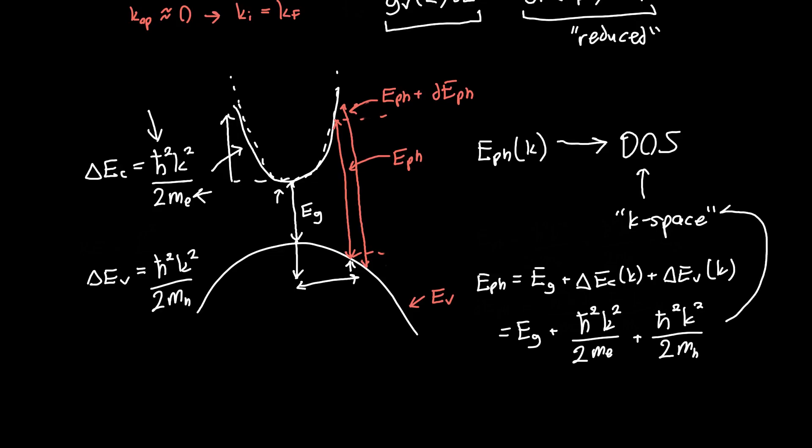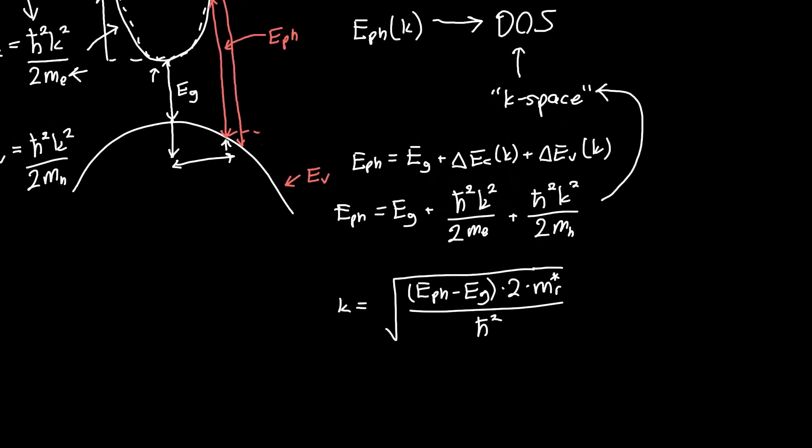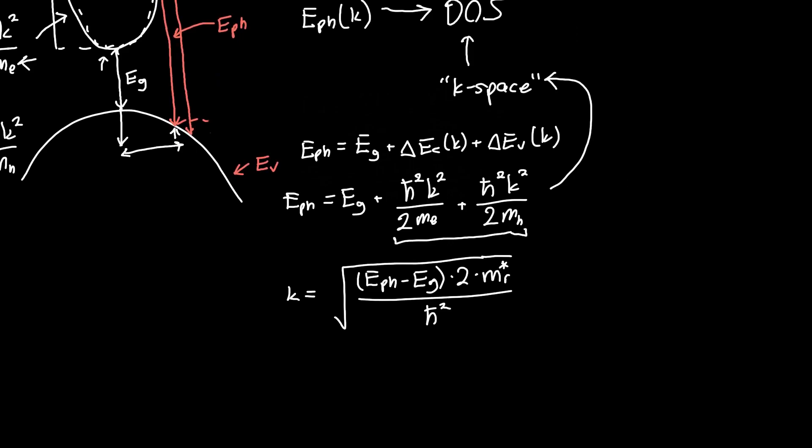Since ultimately we want to go back to k-space to derive the density of states, we want to solve for k. We can do that just by subtracting the band gap energy, multiplying, and taking a square root. And if you do that, you'll get that k is just E photon minus the band gap energy times 2 times what's called the reduced mass mr, divided by h-bar squared. And this mr is basically, let's look at these two terms, they look awfully similar. It would be nice if we could combine them, and we can. h-bar squared k-squared over 2, 1 over mE plus 1 over mH, we can just call this 1 over the reduced mass. That just makes our lives easier in terms of writing stuff out.